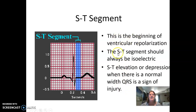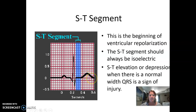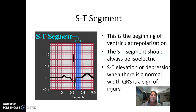The ST segment represents the beginning of ventricular repolarization. After the S wave, the ST segment should be flat — isoelectric, back to the flat line — and then we get the T wave, which is the rest of ventricular repolarization. You always want to look at the ST segment. If you have ST elevation or depression with a normal QRS, elevated ST may indicate acute injury occurring, while depressed ST can potentially indicate injury or old injury.